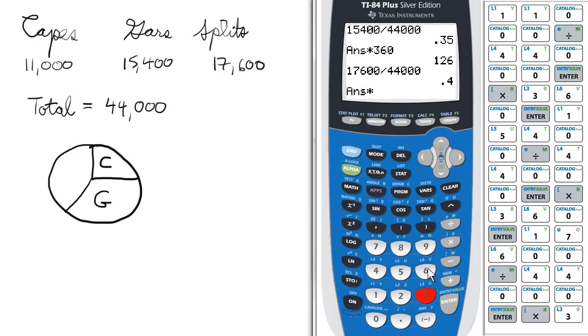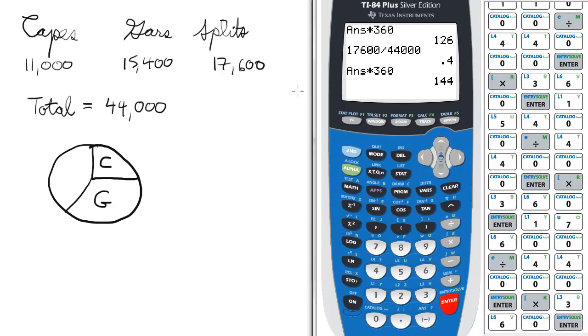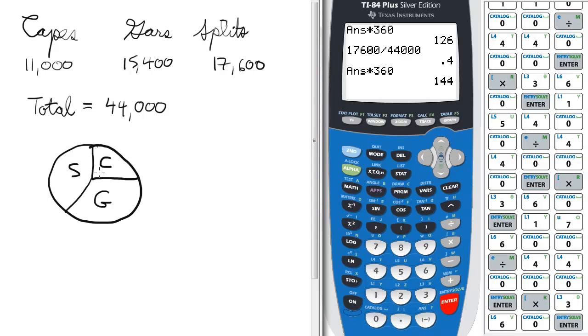But again, multiply it by 360 if you're a stickler. 144 degrees, yeah, that's halfway between about 90 degrees and 180 degrees. So that would be the splits right there. So that would be our pie chart constructed from the angle measures or the fraction of the pie chart.